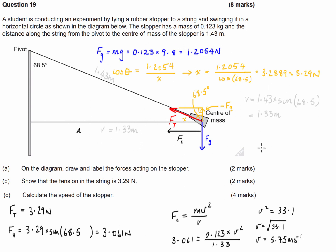The key takeaway is to always use the given angle when working through these problems. You just need to swap sine and cosine depending on which side of the triangle you're solving for. This is a relatively complicated question — the tricky part is getting the correct trigonometric ratio for each force and distance. After that, it's just remembering your formulas, and in Western Australia you'll have a formula sheet from the examining body to refer back to.